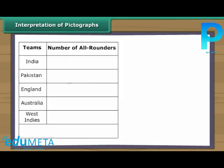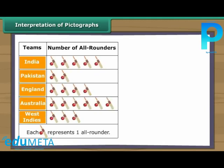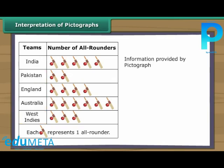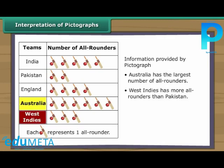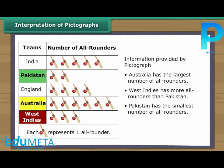Let us interpret one more pictograph. This pictograph shows details of all-rounders in five cricket teams of the world. Each picture represents one all-rounder. Australia has the largest number of all-rounders. West Indies has more all-rounders than Pakistan. Pakistan has the smallest number of all-rounders, and India has the second largest number of all-rounders.